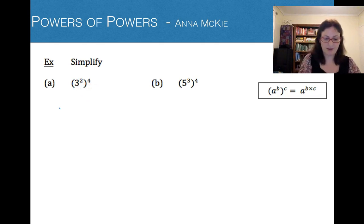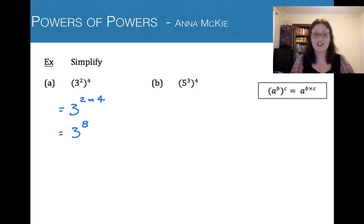So let's write that: equals 3 to the power of 2 times by 4. And then we need to work that out. 2 times by 4 is 8. And that's all that we need to do. We don't need to work out 3 to the power of 8. We just simplified it.